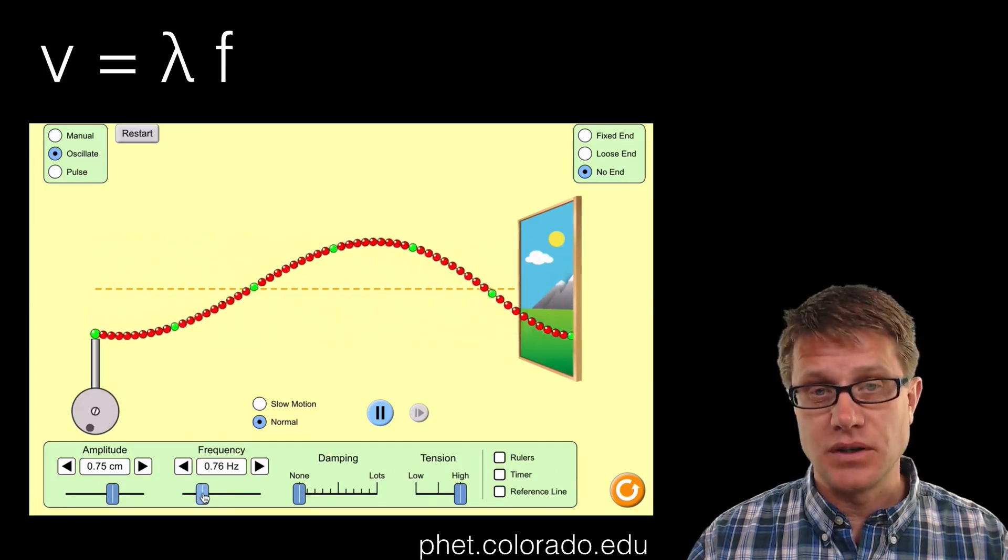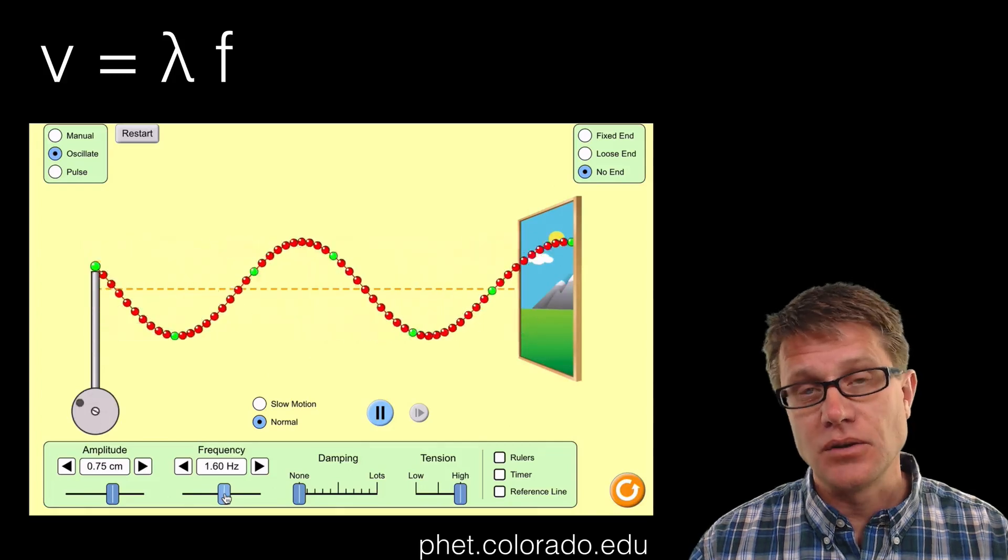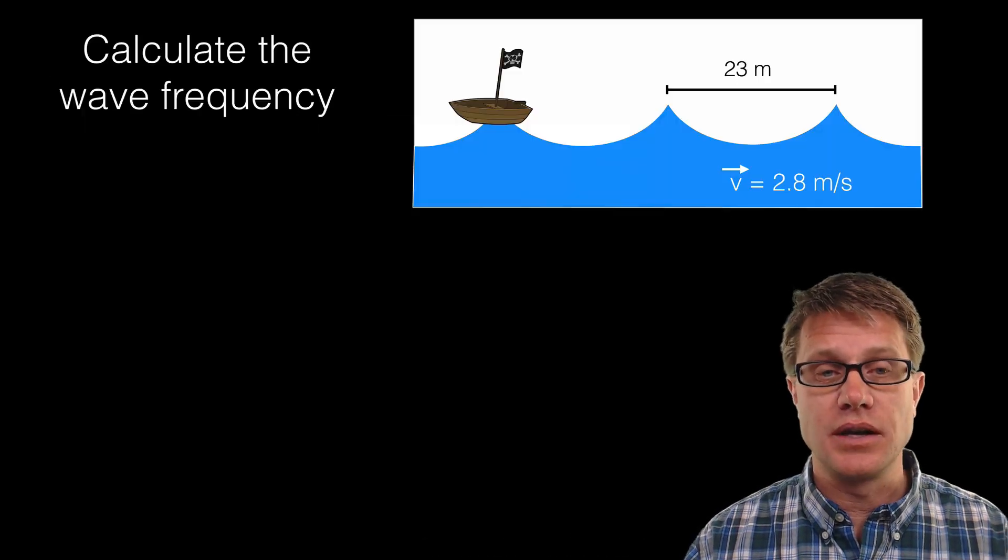As I now decrease frequency, what is happening to the wavelength? Now you can see the wavelength is increasing. So again, the medium determines the speed of the wave. But then there is this relationship between the wavelength and the frequency.